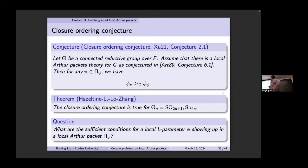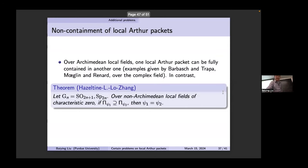This relates to the third set of problems — patching up a local Arthur packet. Given the packet with ψ-side in the middle, what are the L-parameters that could occur? Only those bigger ones, from the tree. But what is the necessary and sufficient condition for an L-parameter to show up in how to patch the packet — this is still open and expected to be very hard. Of course, given an Arthur packet you can use McGlan's construction or Atobe's reformulation to check which ones occur, but what is the general theory is not known yet.